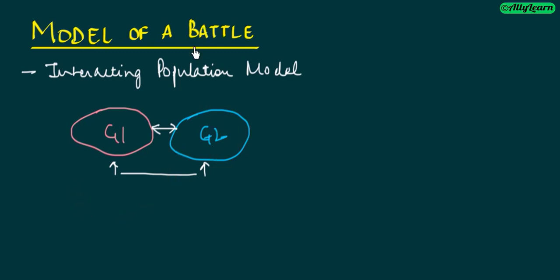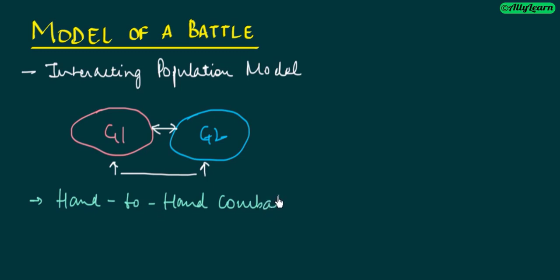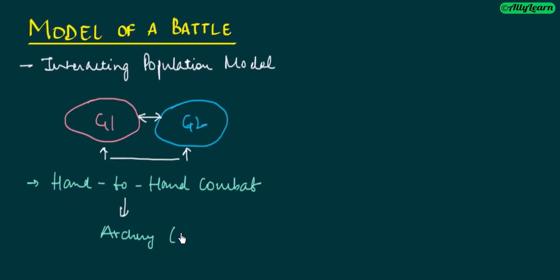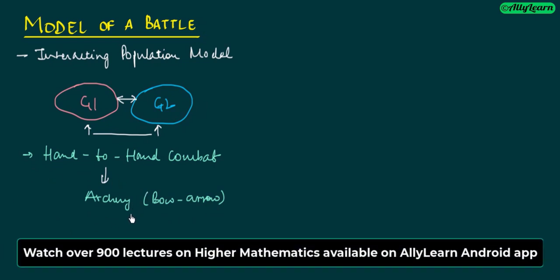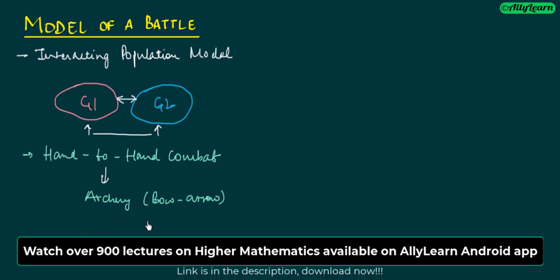In ancient times, we were having hand-to-hand combat. With advancement of technology, we have developed many arsenals. There was archery — we used bow and arrow to battle. It used to be sword, stones, and all these things. Then we moved to archery.